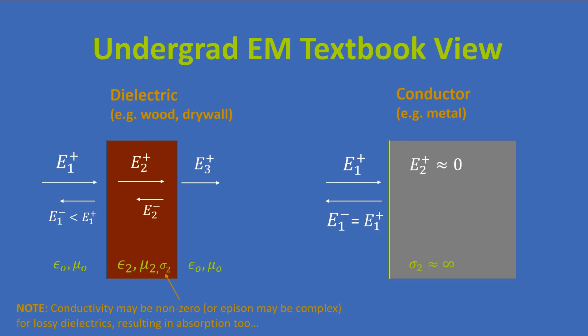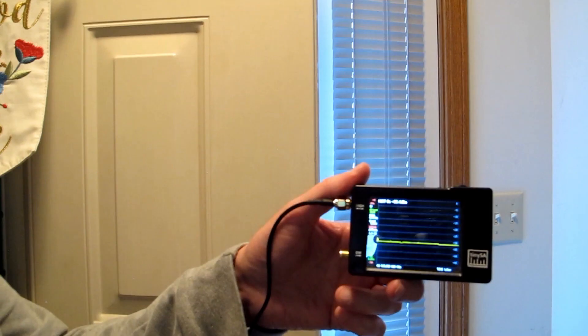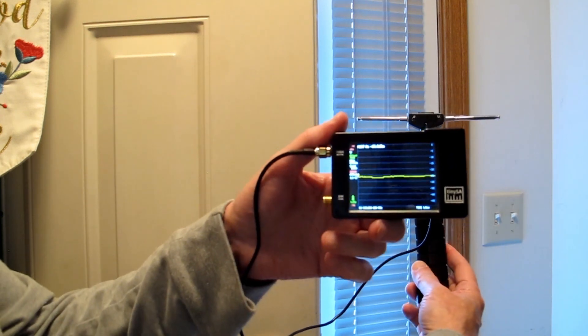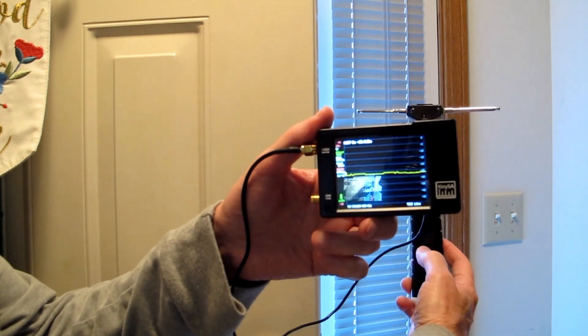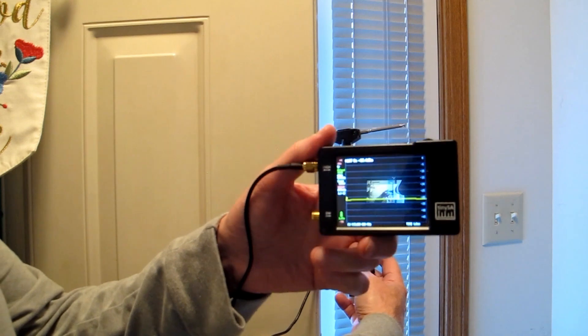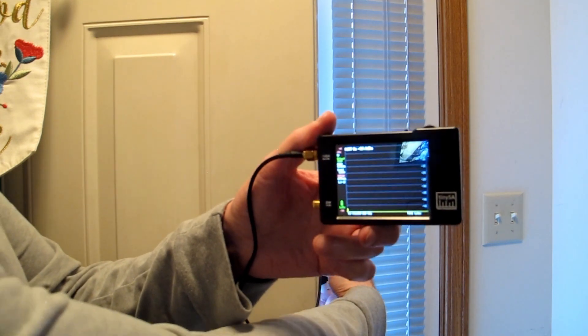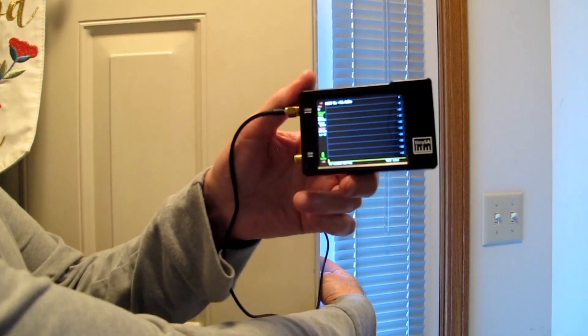Now, as we know from our discussion, the incident signal E1 that hit the metal is not transmitted into the metal. And there's actually going to be nothing coming out the other side. So a metal sheet, like a door, will block signals. And let's try that. Then we'll also look at the case of wood. Here's the signal level with a direct path to it. And if I move it behind the door, the signal goes away.